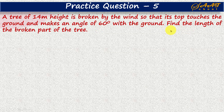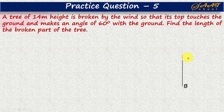We have to find the length of the broken part of the tree. The original height of the tree is 14 meter and it is broken by the wind where it makes a 60 degree angle with the ground. Let's suppose AB is the original height of the tree which is 14 meter, and it breaks at point D.